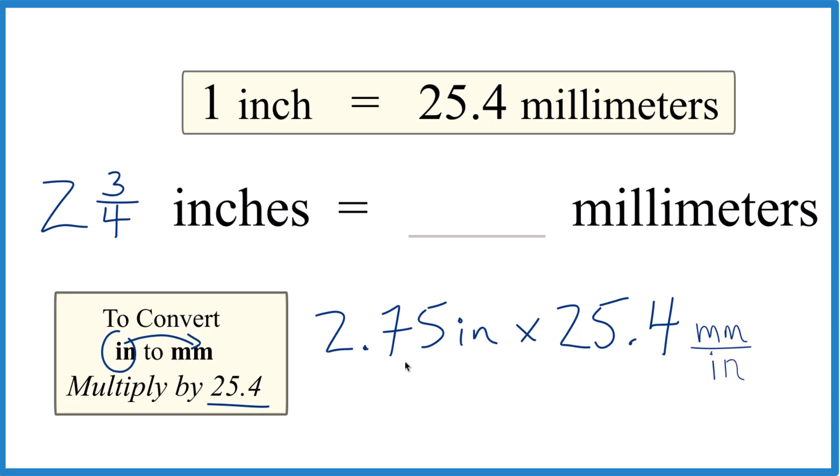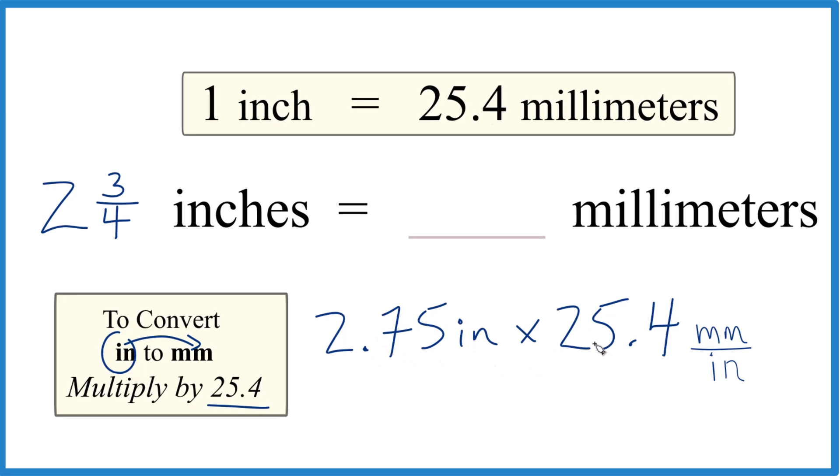Now when we multiply, we take 2.75 times 25.4. That gives us 69.85. Let's call it 69.9. And because we have inches on top and the bottom, they're going to cancel out. Left with millimeters, which is what we're looking for.